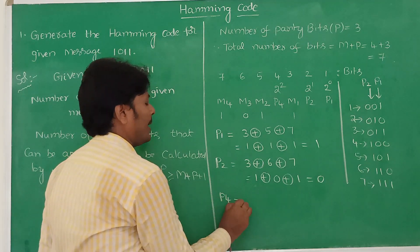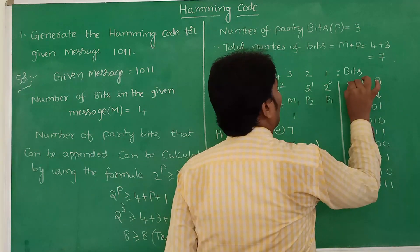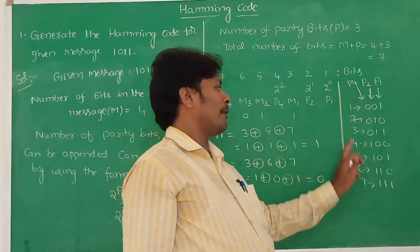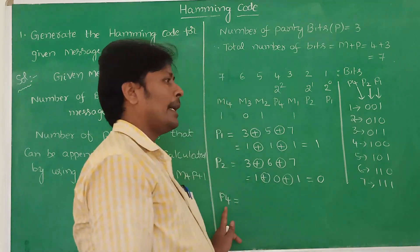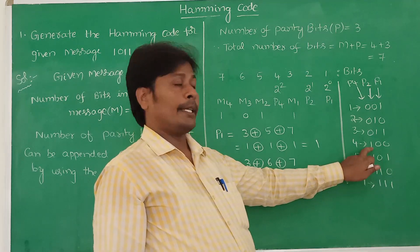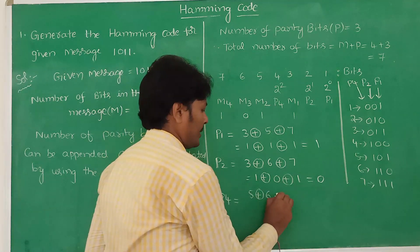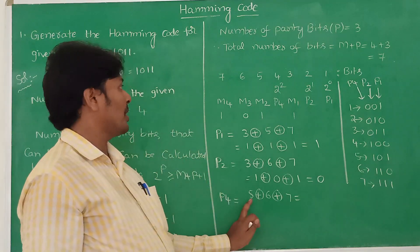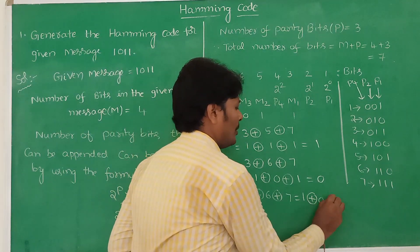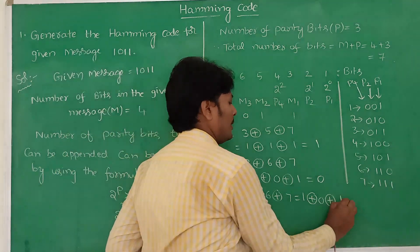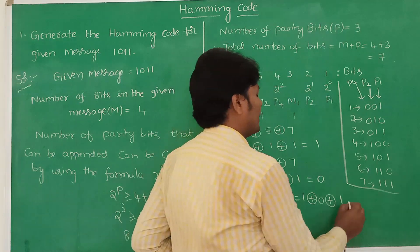Next, we calculate the parity bit P4 by considering the last column. In the last column, ones are present at positions 4, 5, 6, and 7. Since we are calculating P4, position 4 is not considered. The remaining positions are 5, 6, and 7. The message bit value at position 5 is 0, at position 6 is 0, and at position 7 is 1. So P4 = 0 XOR 0 XOR 1: 1 XOR 0 = 1, then 1 XOR 1 = 0. Therefore P4 = 0.